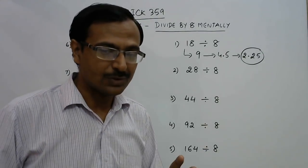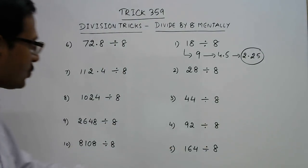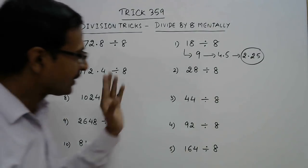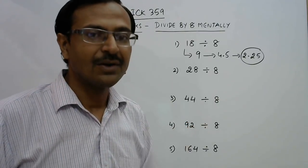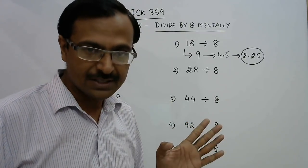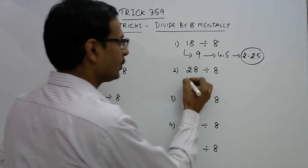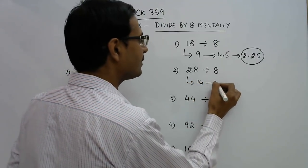Because we are going to apply that technique to solve all these questions. So take half three times, you will get your answer on dividing a number by 8. So see, 28 becomes 14, 14 becomes 7, 7 becomes 3.5. So 3.5 is the quotient when you divide 28 by 8.